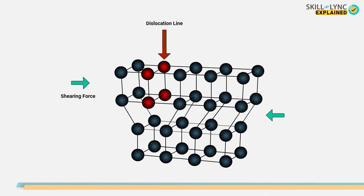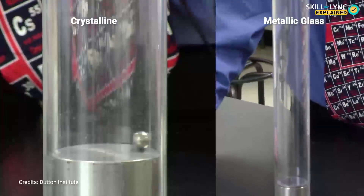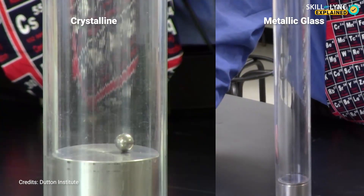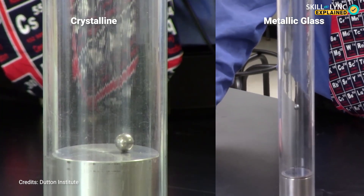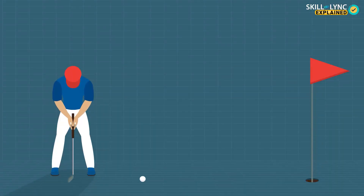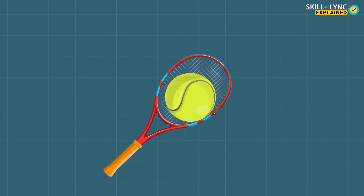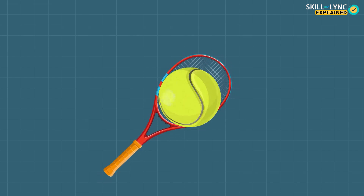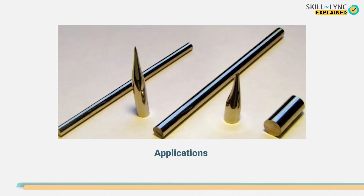Now it's time to answer the first question. Because of the ordered arrangement of atoms, the applied force will be absorbed by crystalline solids due to dislocation of atoms. But this will not happen in metallic glasses because of their amorphous nature — the energy applied will remain in the applied body. This is why metallic glasses are used in some golf clubs. They are also used in rackets so that more energy will go with the ball without being absorbed by the bat.